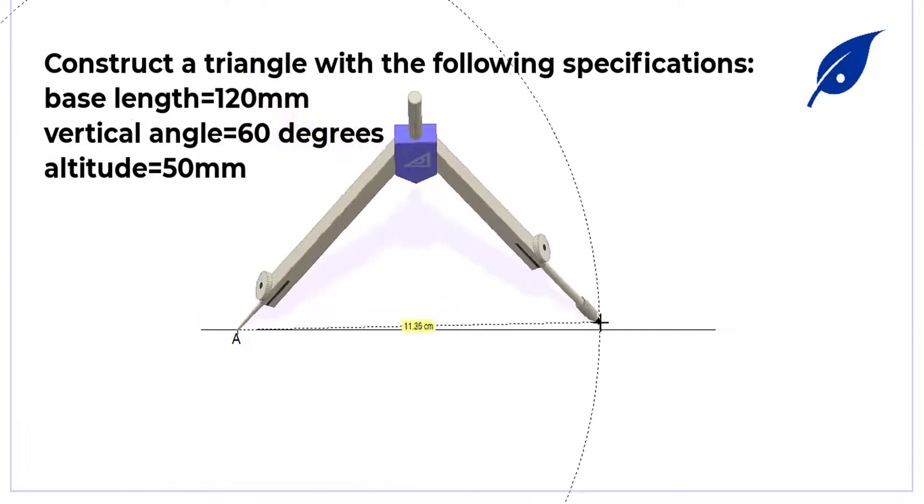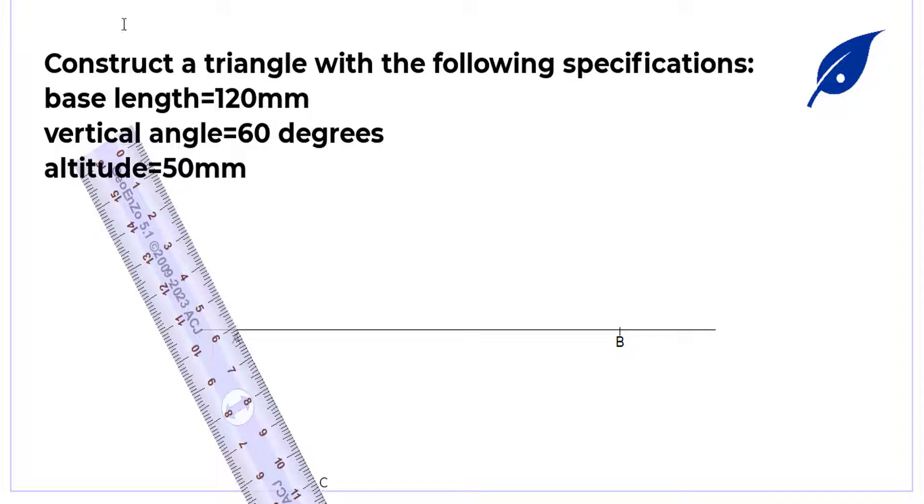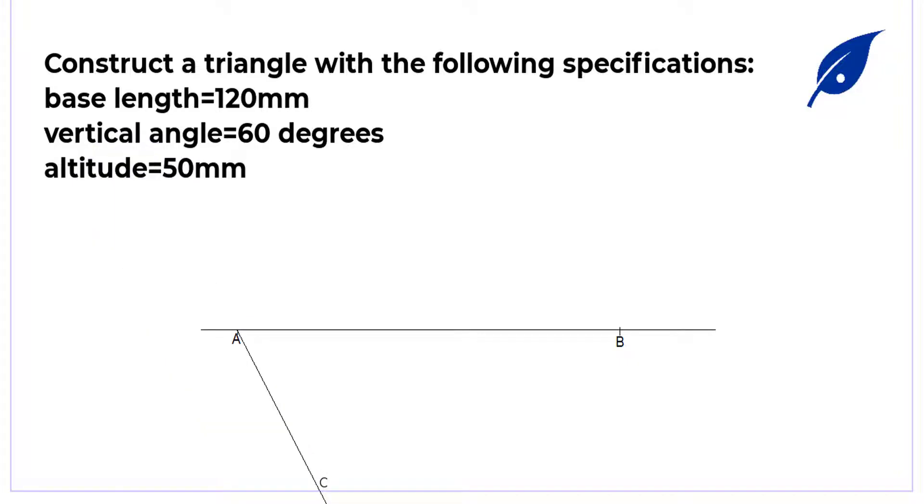Welcome to today's lesson. In this video, we shall consider the construction of a triangle given the base length of 120 millimeters, a vertical angle of 60 degrees, and an altitude of 50 millimeters. The first thing to do is to draw our line AB.